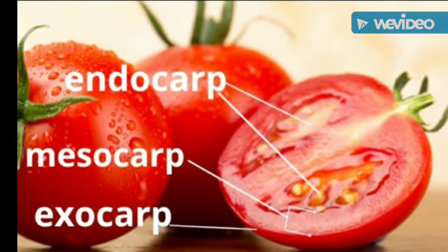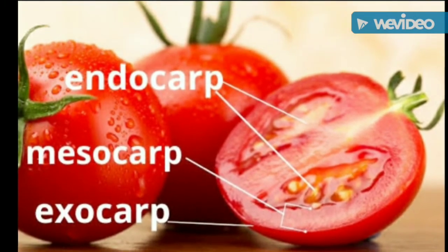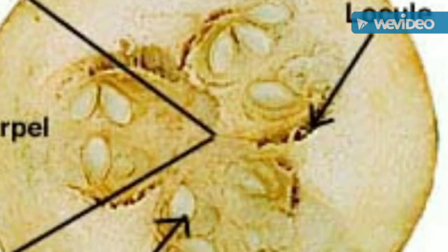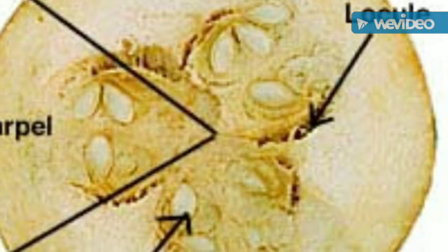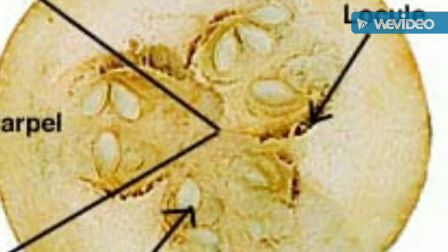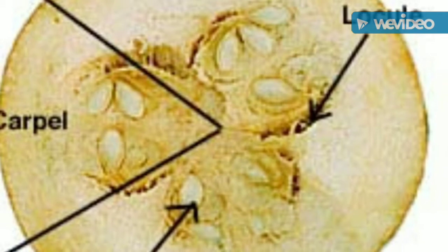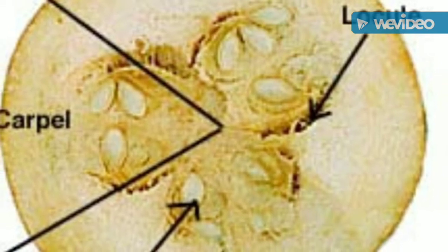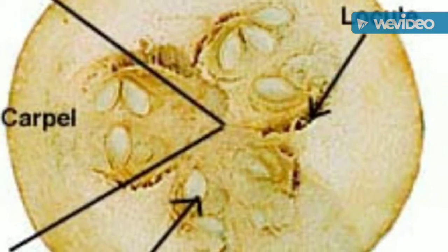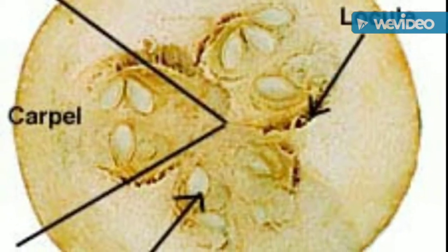In berry, the endocarp and mesocarp are fused to form pulpy and edible tissue. Pepo of pumpkin is developed from tricarpellary syncarpous gynoecium of the inferior ovary. Mesocarp and endocarp are fused to form pulpy tissue.